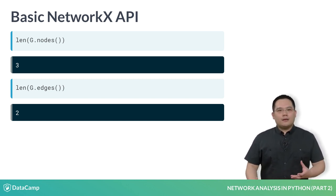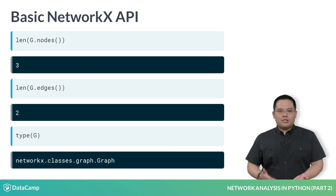If you remember, there were multiple types of graphs, and we can check the type of the graph by doing type(G), which in this case is a regular graph object. Other graph types include DiGraph, MultiGraph, and MultiDiGraph.